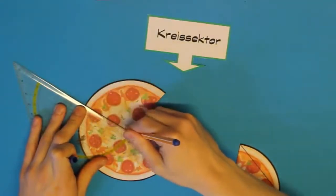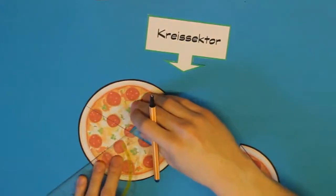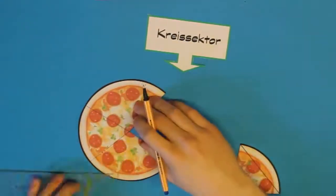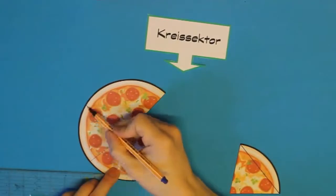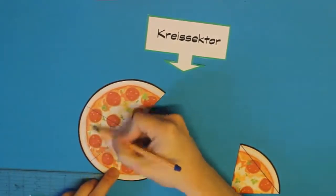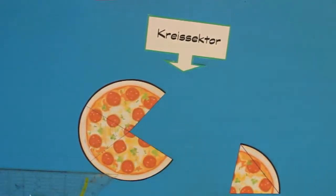Jetzt zeichnen wir am besten gleich noch einen weiteren Kreissektor ein. Dazu zeichnen wir einfach zweimal den Radius ein und bemalen die begrenzte Fläche. Fertig. Das wäre mal alles zum Kreissektor.